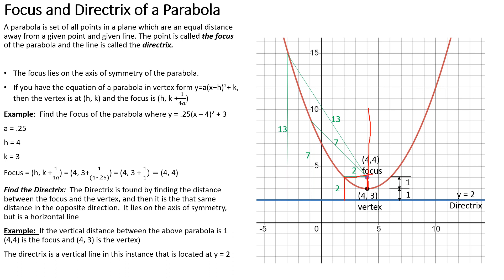If the distance from the focus to a point on the parabola is 2, and you drop straight down 2, you reach the directrix — same distance. If the distance is 7 to a point on the parabola and you go 7 straight down, it touches the directrix. Similarly, if it's 13 from the focus to the parabola and you drop that line straight down 13, it stops at the directrix.